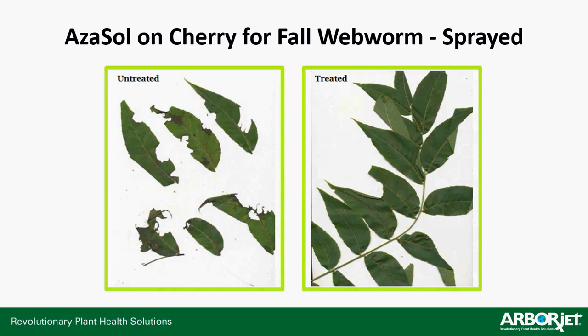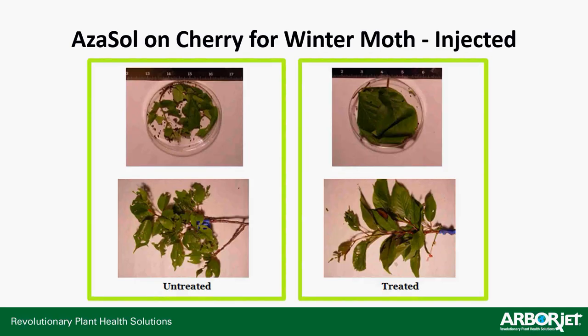Looking at efficacy — some untreated versus treated photos. You can see the untreated cherries on the left that had fall webworm; it was sprayed onto these leaves. You can see the leaf tissue on the left was eaten at least a quarter, if not 30 or 40 percent, versus the leaf tissue on the right which was treated and doesn't have any chewing effects at all. There is just a broken leaf that got broken off. So you can see it does a good job chasing away the fall webworm when sprayed.